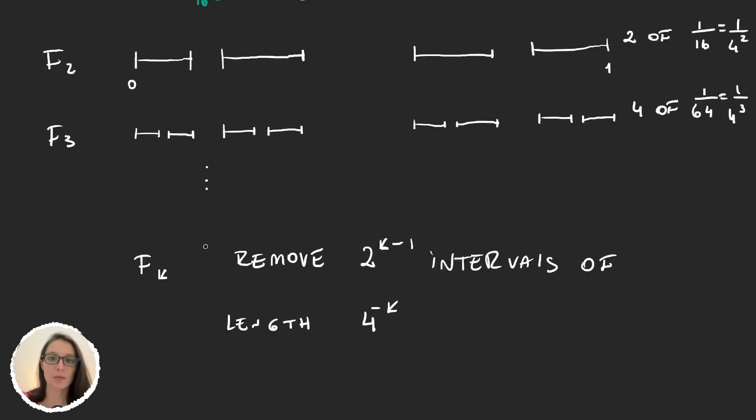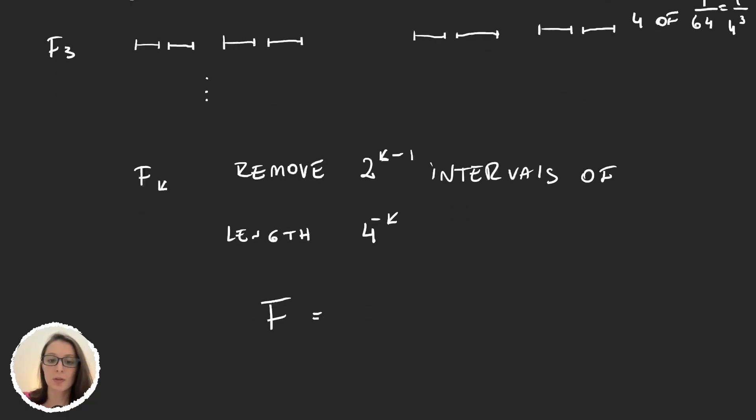So now the set we're actually building would be F equal to the intersection of all these F_k. So it would be basically just continuing this construction up to infinity.